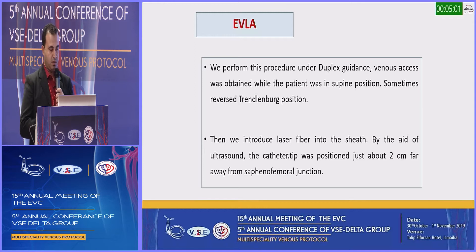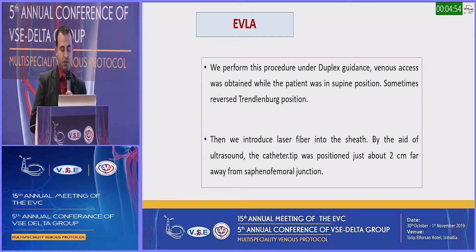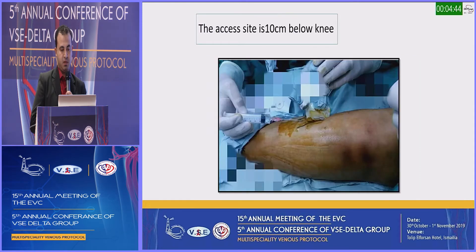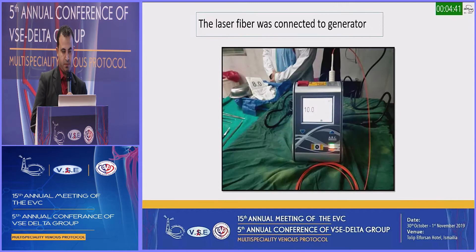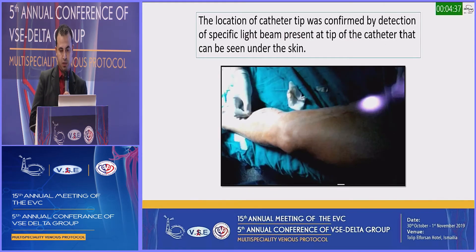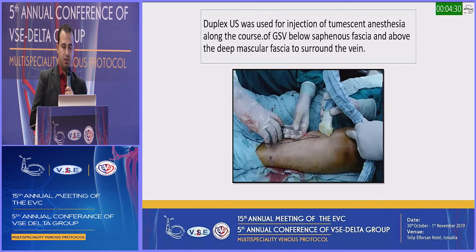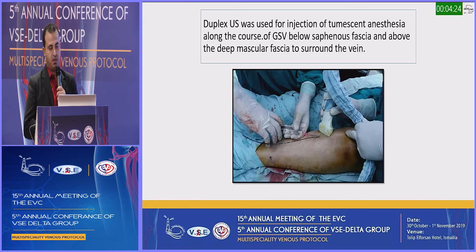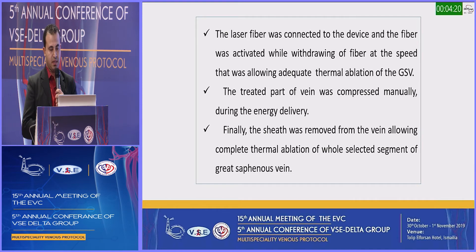For endovenous laser ablation, performed under duplex guidance, venous access was obtained with the patient in supine position, sometimes reversed Trendelenburg position. A laser fiber was introduced into the sheath by aid of ultrasound. The catheter tip was positioned just 2 cm away from the saphenofemoral junction, with access site 10 cm below the knee. Laser fiber is connected through the generator. Location of the catheter tip was confirmed by detection of specific light visible under the skin. Duplex ultrasound was used for injection of tumescent anesthesia along the course of the great saphenous vein, below saphenous fascia and above deep muscular fascia to surround the vein. The laser fiber was activated while withdrawing the fiber at a speed allowing adequate thermal ablation of the great saphenous vein.